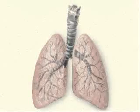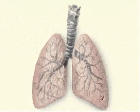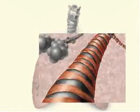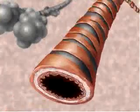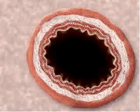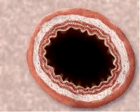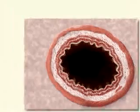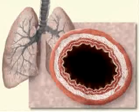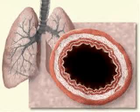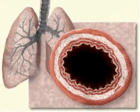Looking at a cross-section of a bronchial, it is evident that under normal conditions, there is little resistance offered to the incoming rush of inspired air. The wall of the bronchial is relaxed and provides an open airway.